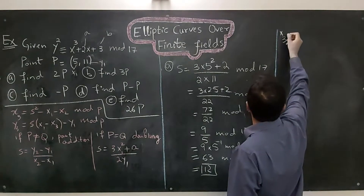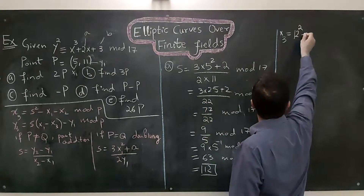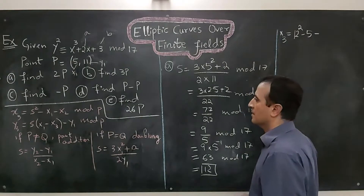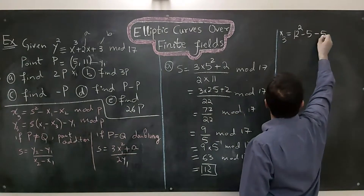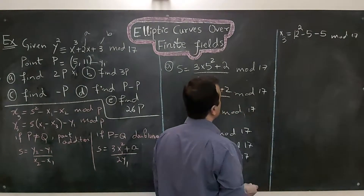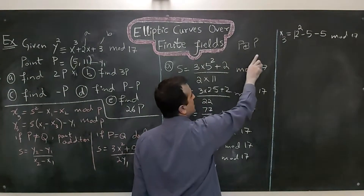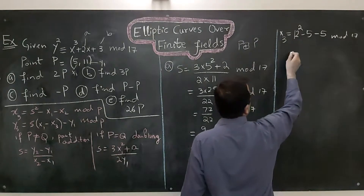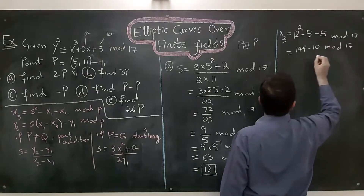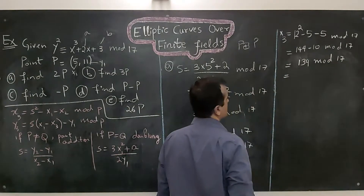Now we use the slope to calculate 2P. First we compute x3, the x-coordinate of 2P: x3 = s² - x1 - x2 mod 17. Since we are doing point doubling, x1 and x2 are both 5. So x3 = 144 - 10 mod 17 = 134 mod 17, which equals 15. So x3 is 15.